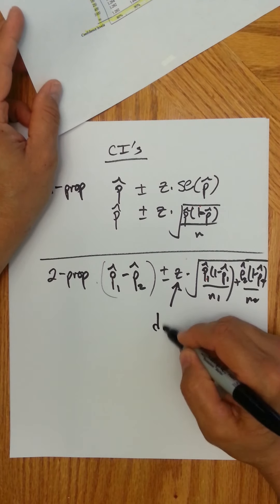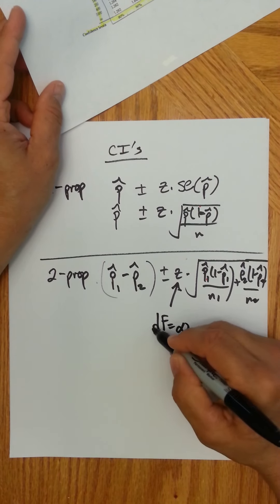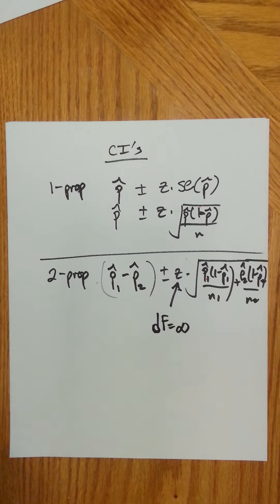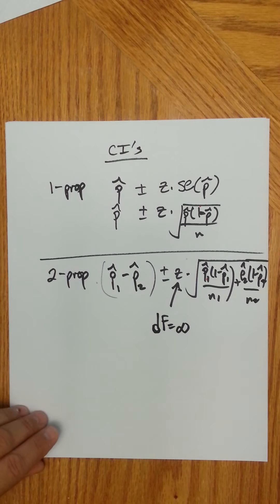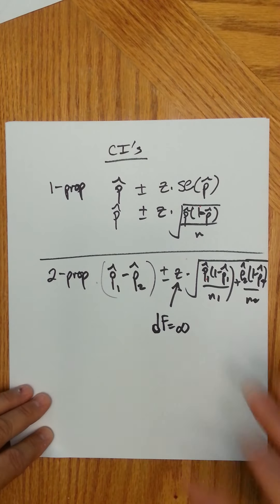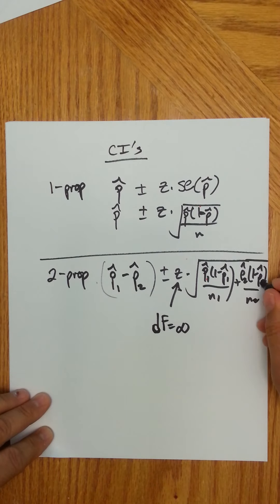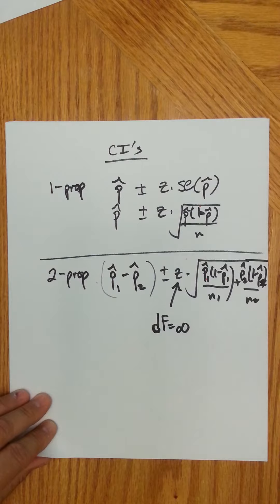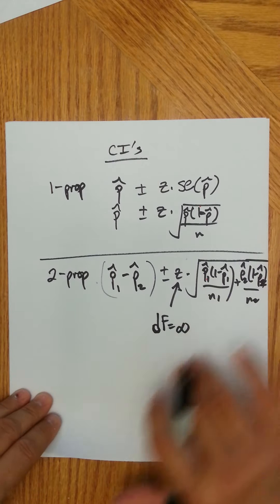So here, df is infinity, because remember this is a yes-no trait, you don't have t distributions, it's a normal distribution underlying this. And then you have the standard error for this, and there's a special video just on standard error that tells you how to do that.